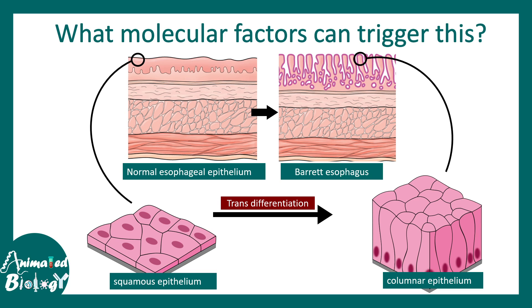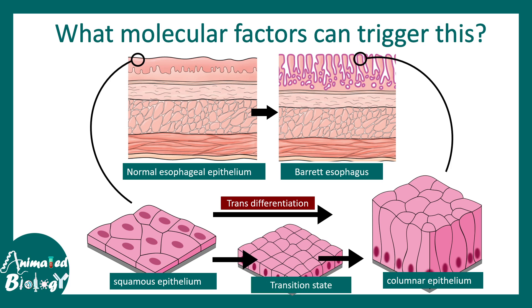This transformation can be direct, or it can be sequential with a transition state in between. There is a transient state which eventually converts into the columnar epithelium. Both possible models are actually possible and have been experimentally reported.